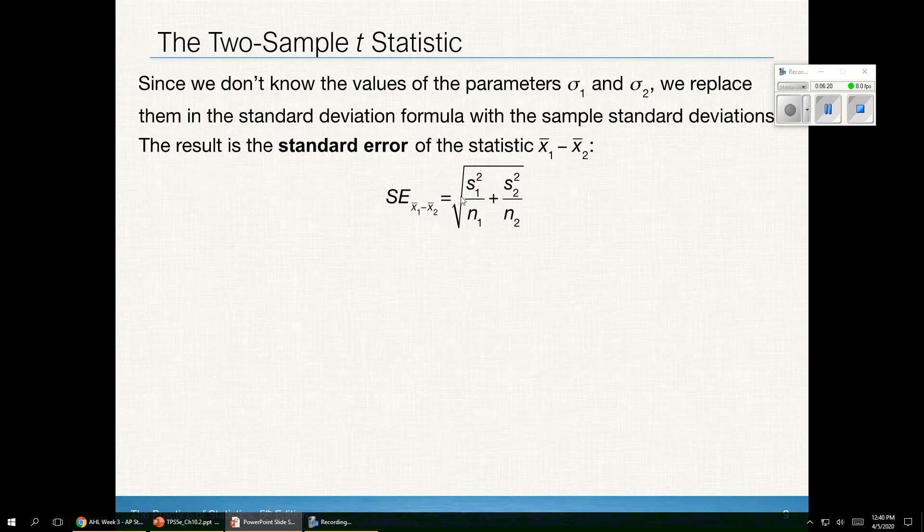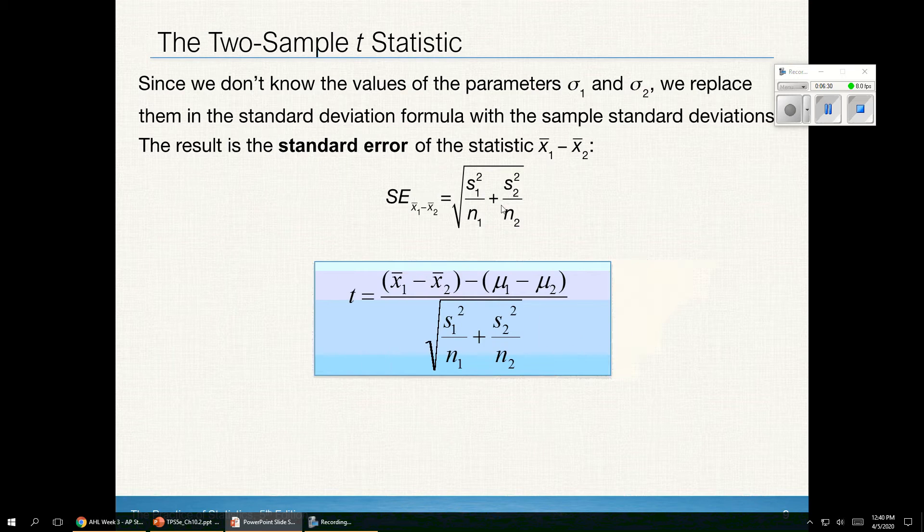Since in real life I don't know the true standard deviations, I can use s's to determine the standard error. So I've replaced sigma here with s's. This gives me a formula for the t-test statistic. This is the statistic minus the parameter divided by the standard error of the statistic.